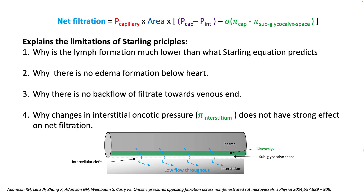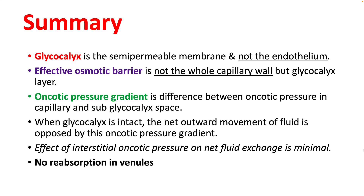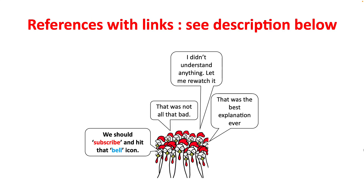The modified Starling principle explains all of the observations and limitations discussed: why lymph formation is much lower than the Starling Equation predicts, why there is no edema formation below the heart, why there is no backflow of filtrate at the venous end, and why changes in interstitial oncotic pressure do not strongly affect net filtration. In summary, the glycocalyx is the semipermeable membrane — not the endothelium. The effective osmotic barrier is the glycocalyx layer, and the oncotic pressure gradient is between the capillary and sub-glycocalyx space. When the glycocalyx is intact, net outward fluid movement is opposed by this gradient, with minimal effect from interstitial oncotic pressure and no reabsorption in venules. References with links are in the description below.